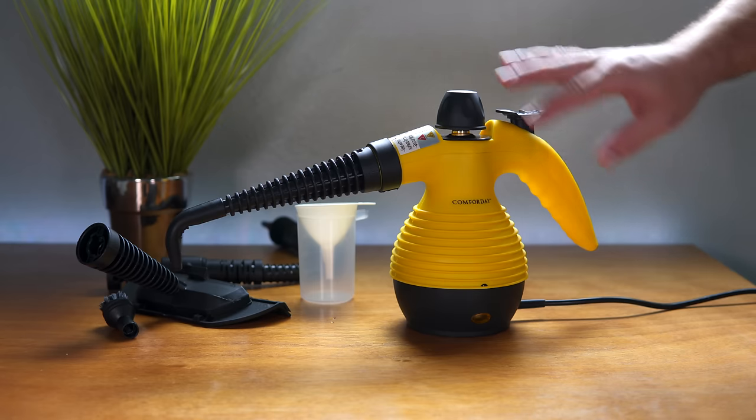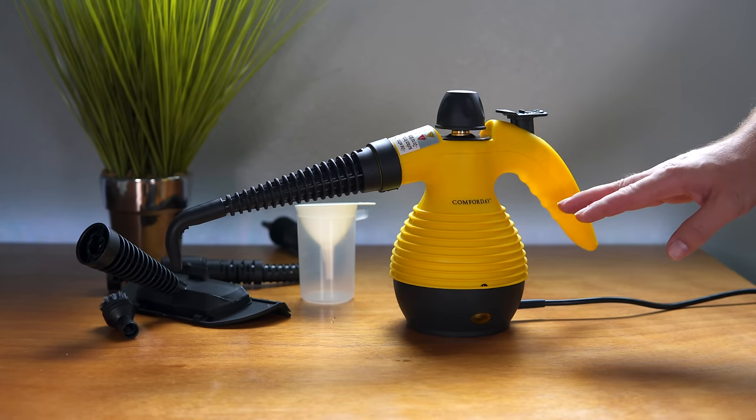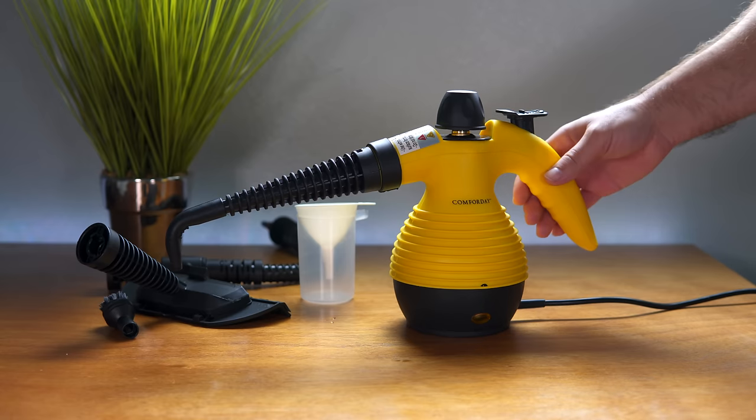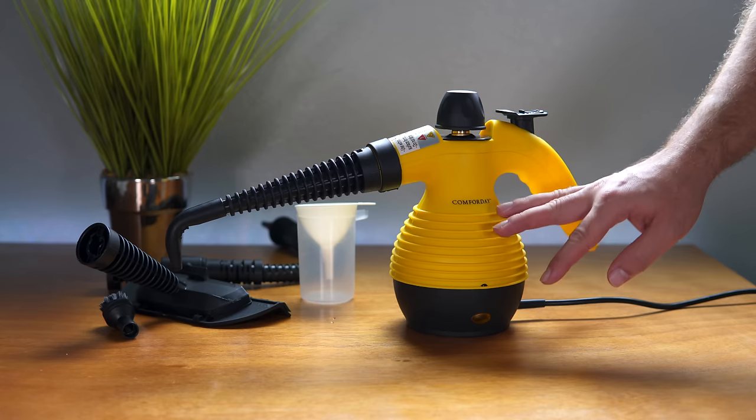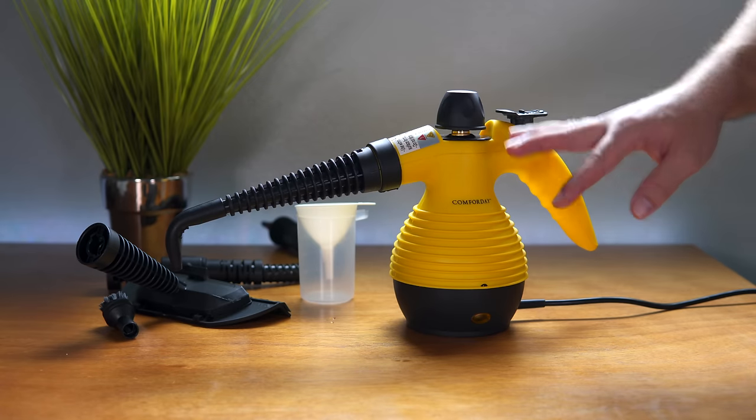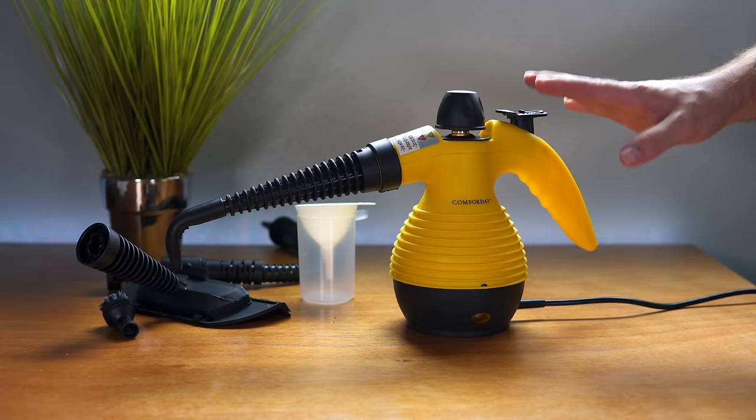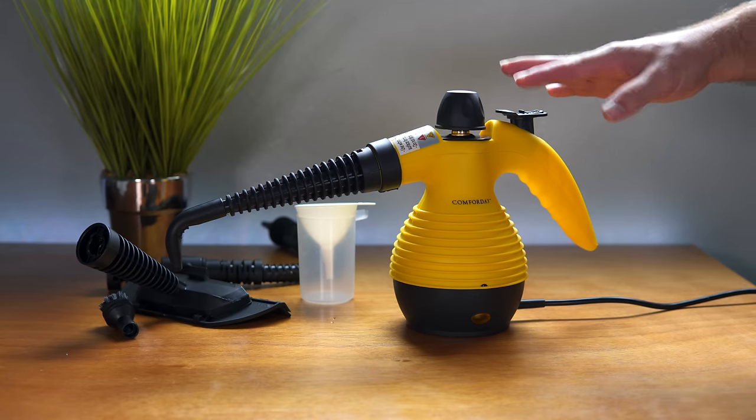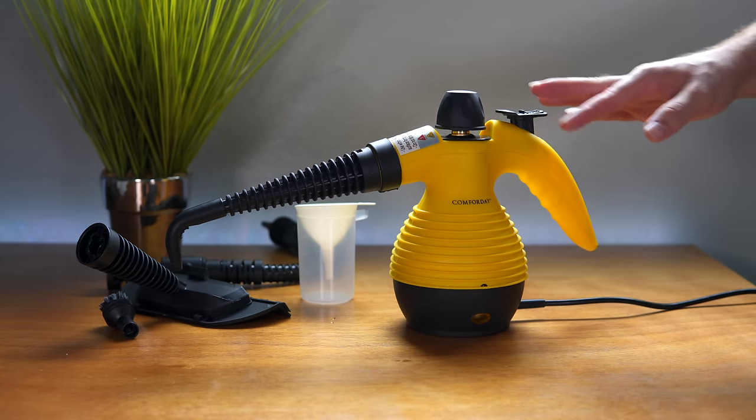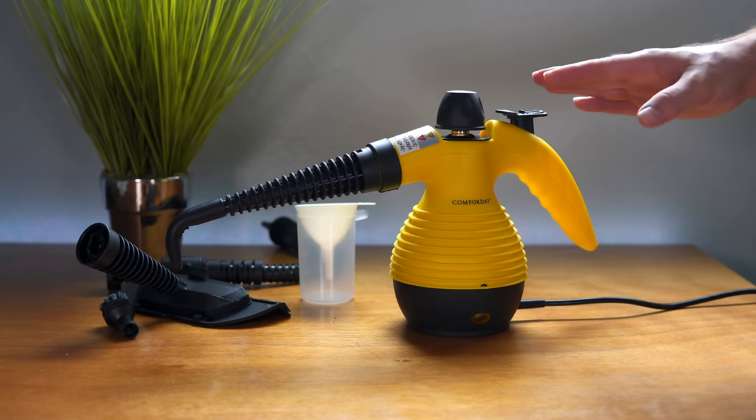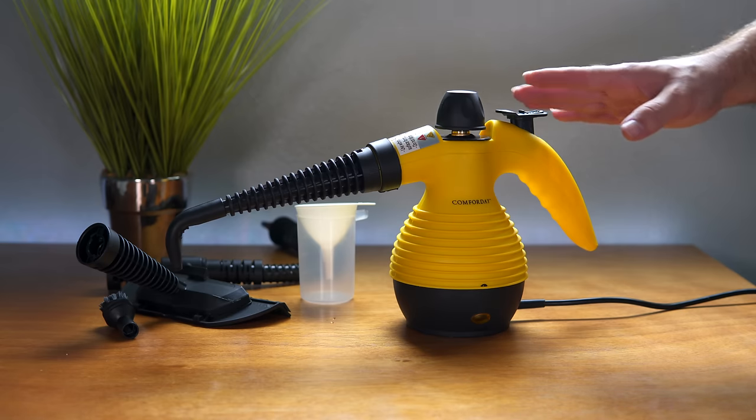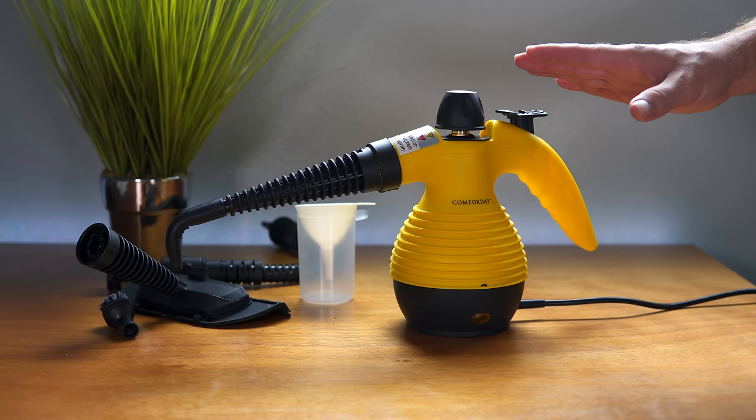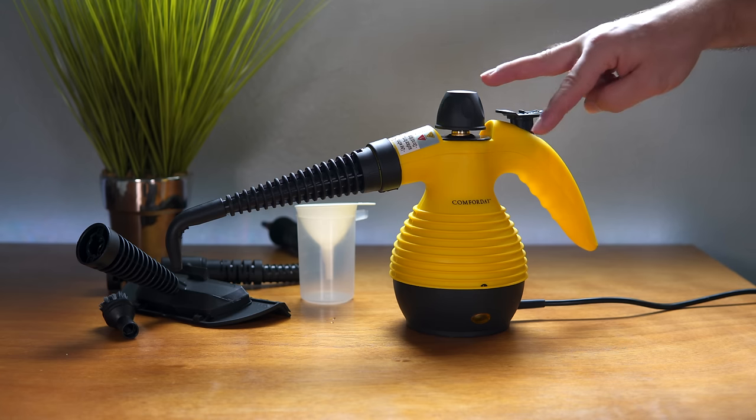That is the Comforday Steam Cleaner. If you need a steam cleaner, this is a very good option because it's small, compact, easy to use, seems to be very powerful, and has a lot of attachments that come with it. Overall, it just seems like a great little steamer. If you want to pick up a steamer like this, I'll leave some links in the description. Check that out, it's from Amazon Prime. If you enjoyed this video, hit that like button. If you want to see more videos like this and a bunch of other stuff I do on this channel and you're not subscribed, hit that subscribe button. As always, thanks for watching, and I'll see you on the next one.